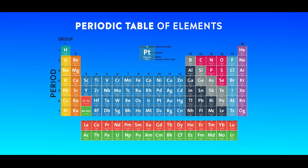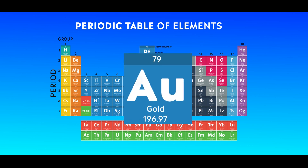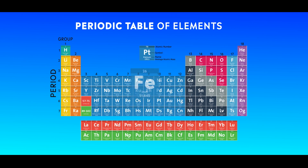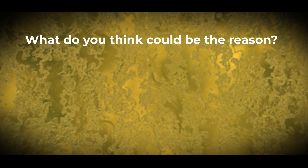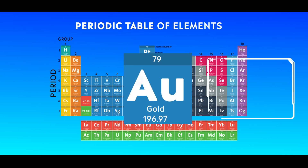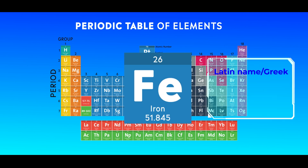Now, if you look at the elements in the periodic table, the names of some elements and their symbols are completely different. For example, gold is given the symbol Au, which actually has nothing to do with the English name. Silver is Ag, mercury is Hg. What do you think could be the reason behind it? It is because some symbols are derived based on the names of elements in Latin and Greek. Let us take gold as an example — gold is given the symbol Au because its Latin name is 'aurum'. Similarly, iron is given the symbol Fe because its Latin name is 'ferrum'.